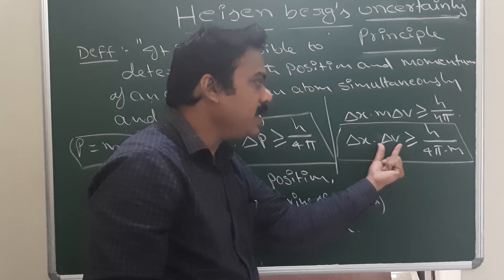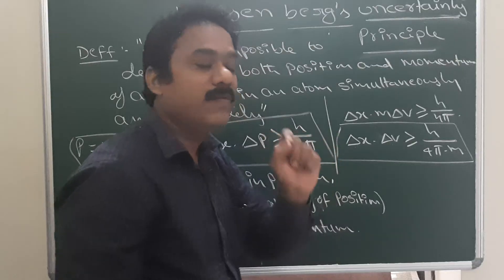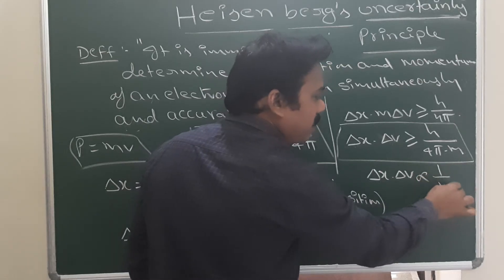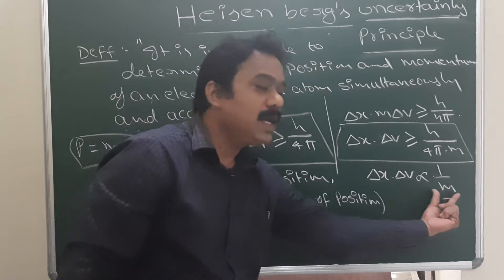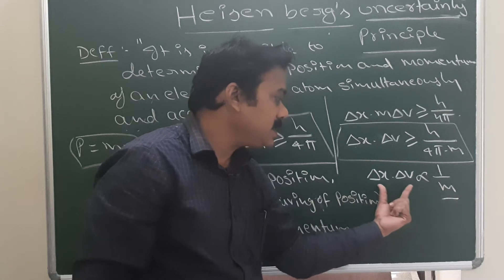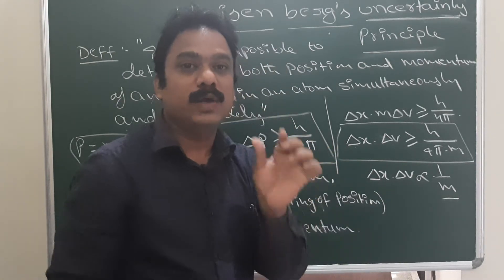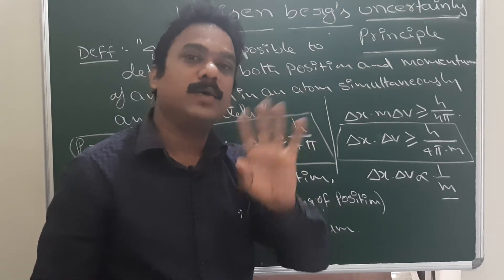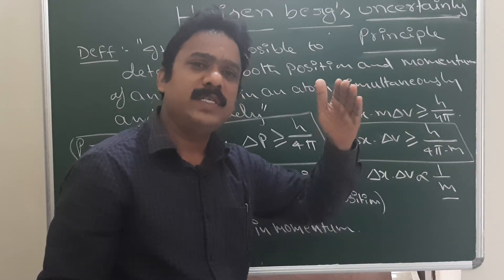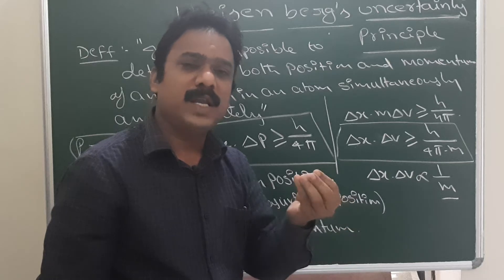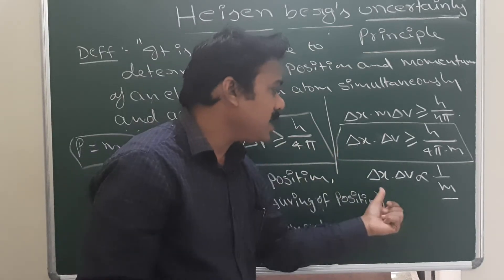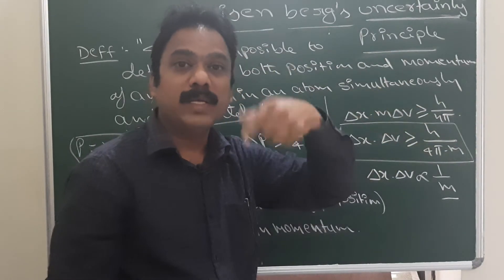The product of uncertainties in position and velocity is inversely proportional to the mass of the particle. If mass increases, the error decreases; if mass decreases, error increases. For large objects like a 40-gram or 100-gram ball, the error is negligible. But the mass of the electron is very, very small, so the error in measuring the electron is very high.